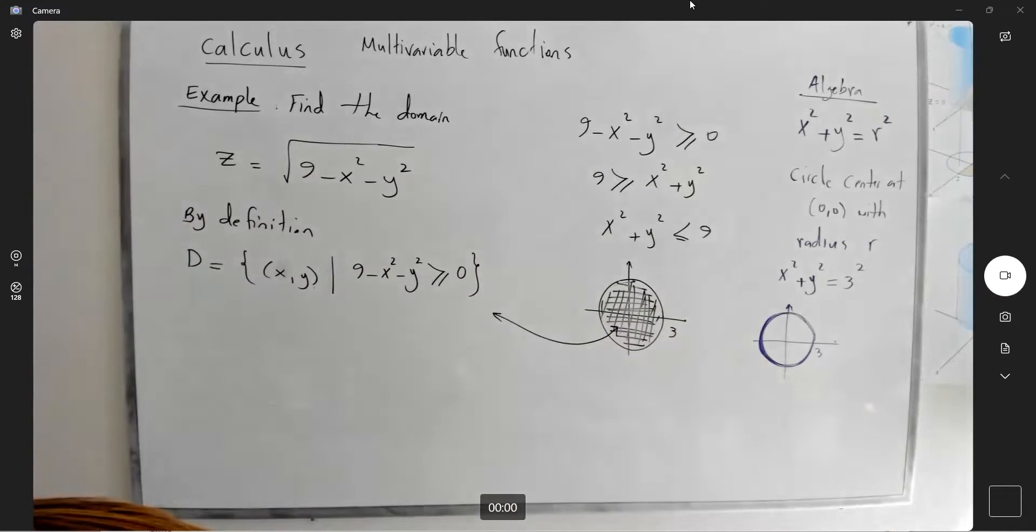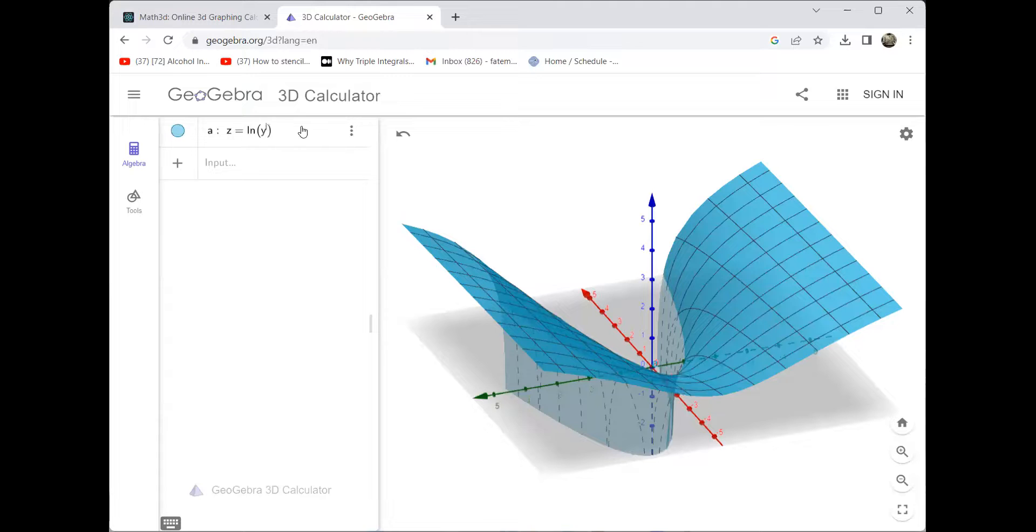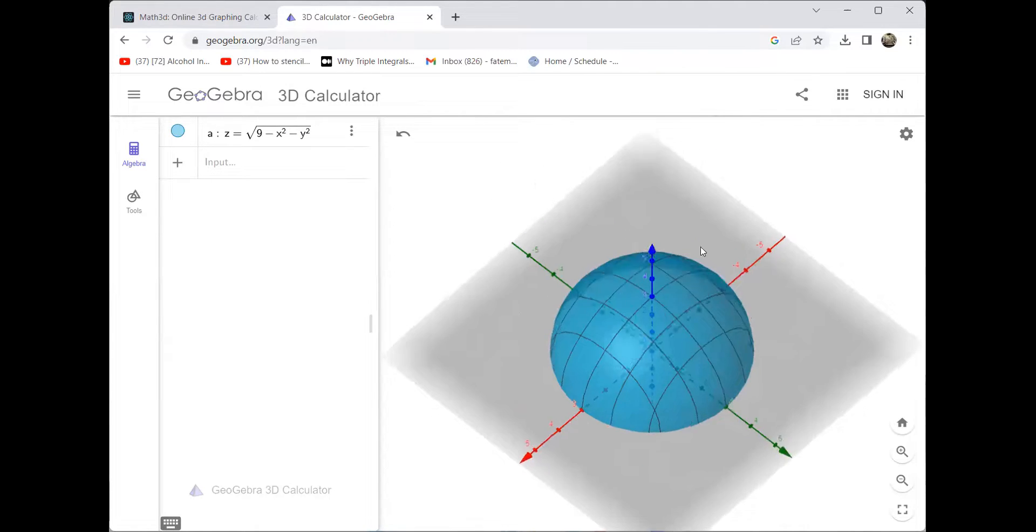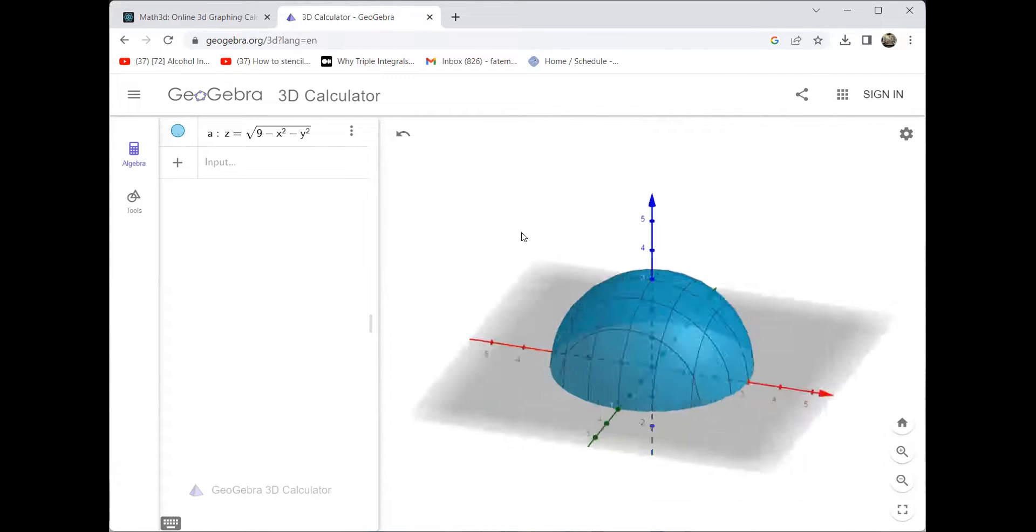You can take a look at the function as well. We have 9 minus x squared minus y squared. So this is the object that we have. This is the surface that we have, everybody.